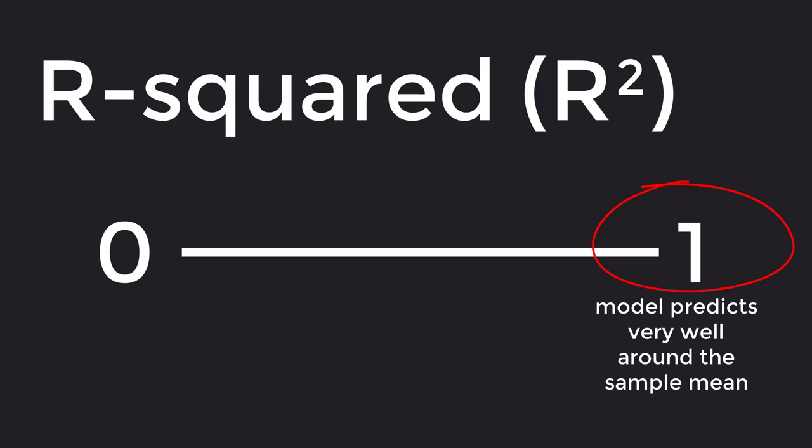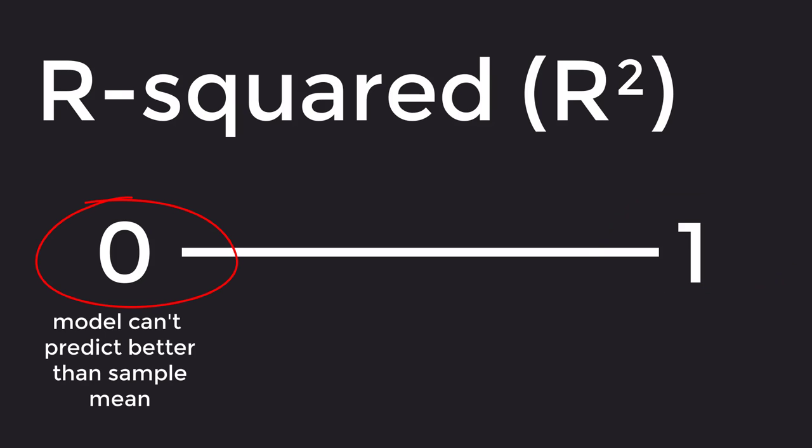R-squared of 0 means that our model can do no better than the sample mean in predicting the actual results.